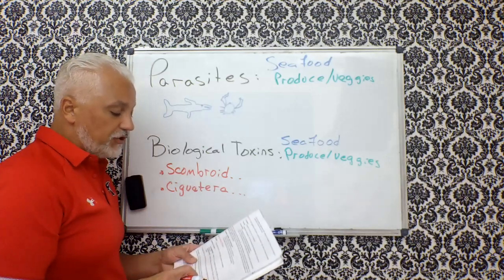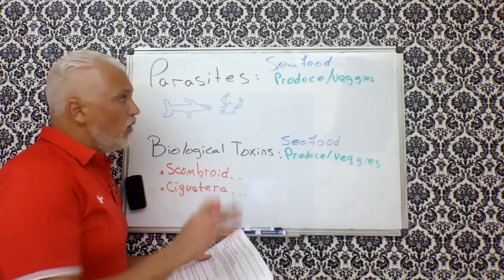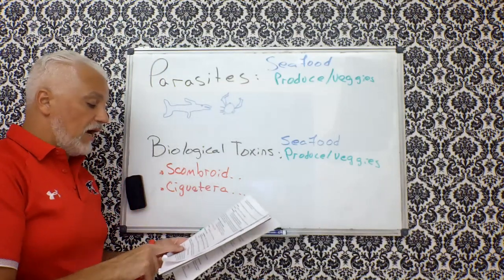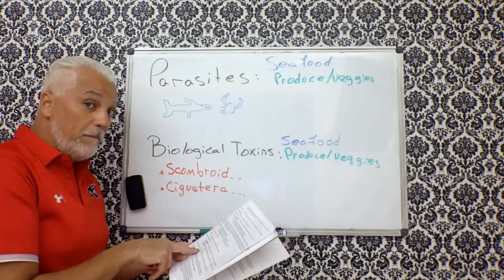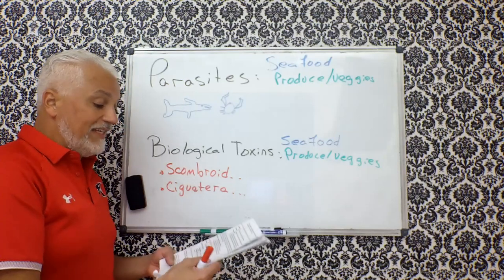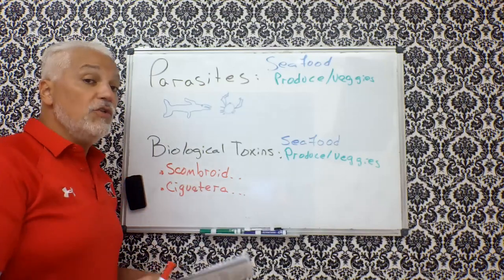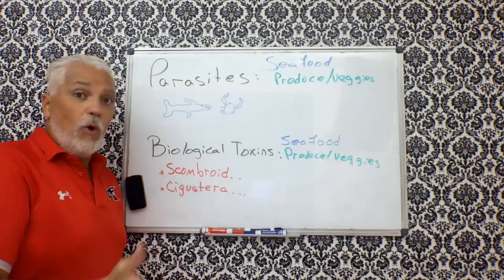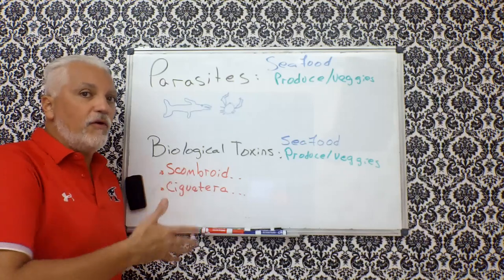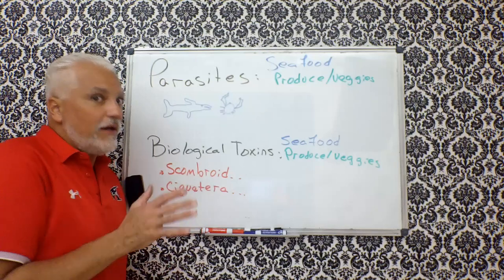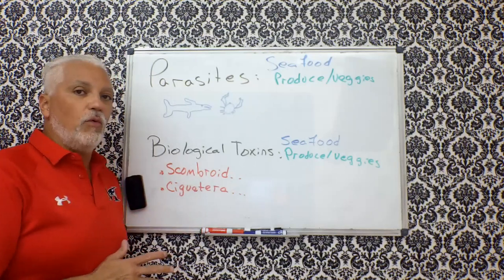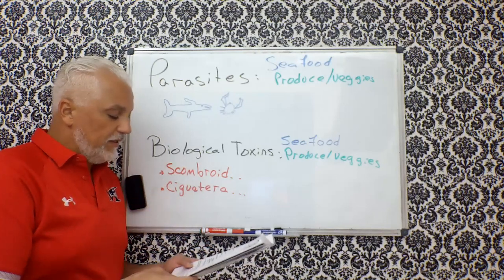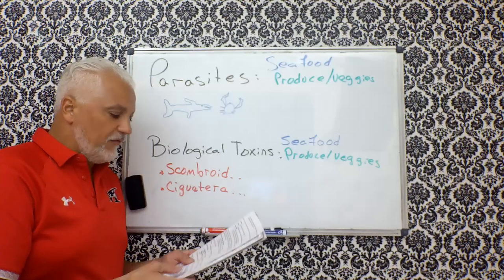Within each one of these, in your booklet, you'll see the different types of fish that are associated with each one of those. If you look at the bottom of biological toxins, it has purchased fish from approved suppliers. Since cooking and freezing cannot destroy these toxins, what does that mean to purchase from approved suppliers?